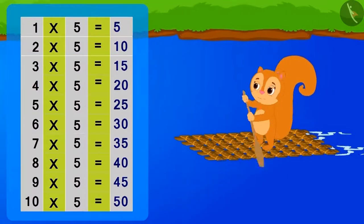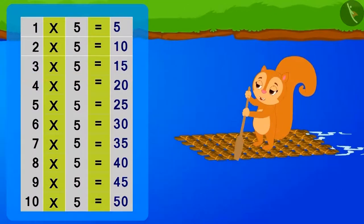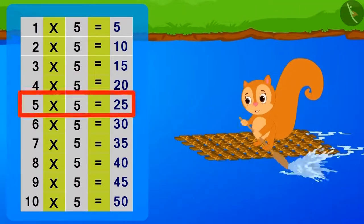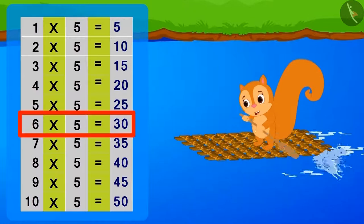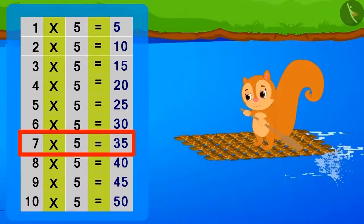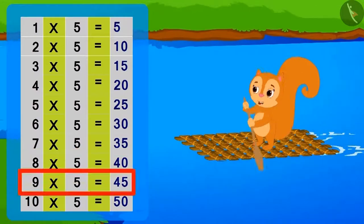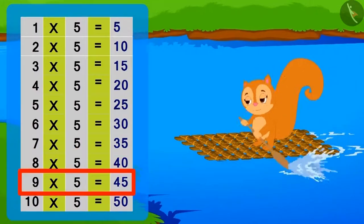5 twos are 10, 5 threes are 15, 5 fours are 20, 5 fives are 25, 5 sixes are 30, 5 sevens are 35, 5 eights are 40, 5 nines are 45, 5 tens are 50.